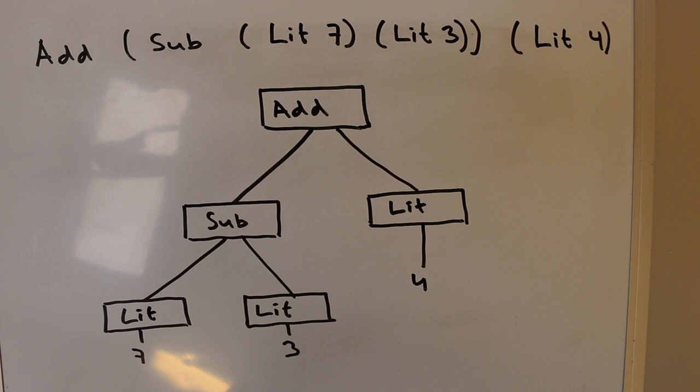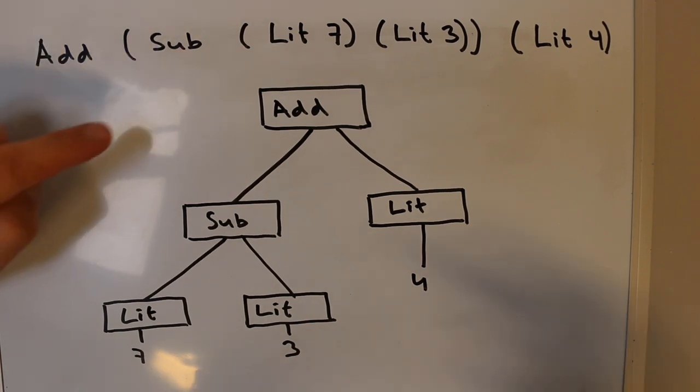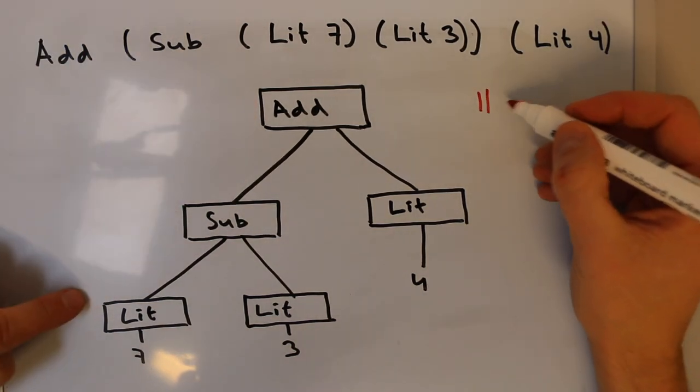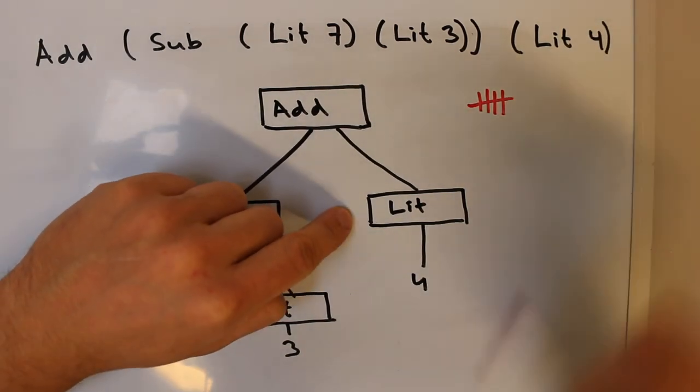Now we'll look at a couple of examples of recursive functions over such recursively defined types, starting with the Expr type. All of these functions will be pure functions with no side effects — functions from a recursively defined type to any type — and they will happen to be catamorphisms as well. The first one we'll call 'count', which counts the total number of expressions inside any given expression. For the example we just saw, manually counting gives us five expressions in total.